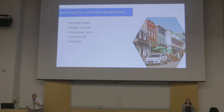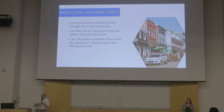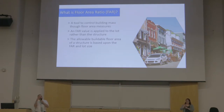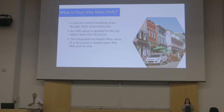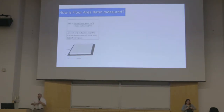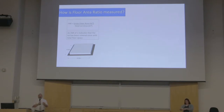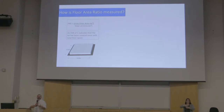One of the things we want to talk about is simplifying that. Floor area ratio is a tool we can use to control building mass without identifying each of those setbacks, heights, and angle controls, but still controlling the overall mass of a building. What it tries to measure is the allowable buildable floor area of the structure, and they relate that to the size that the lot is on. We measure floor area ratio by assessing the gross floor area of a building and dividing that by the total lot area. What is very particular in calculating FAR is what gets included and what doesn't — your access chute, stair access, and elevator don't get counted in most FAR calculations.